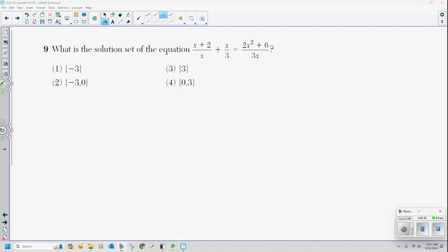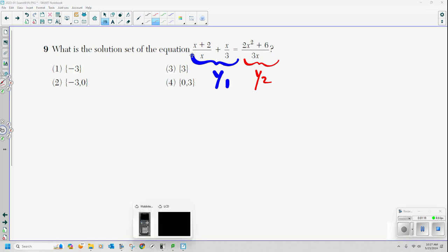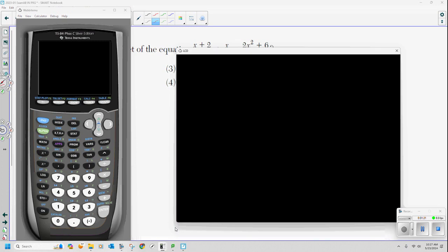Number 9. What is the solution set for the equation (x+2)/x + x/3 = (2x²+6)/(3x)? I am going to use the calculator. Why wouldn't you? I have no idea. I'm going to put this left side into y1 and the right side into y2. And I like to color coordinate because y1 is blue and y2 is red.